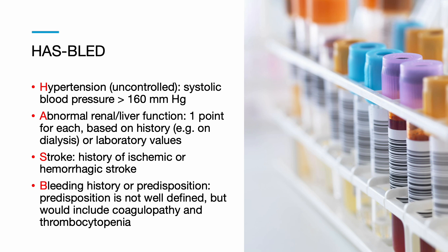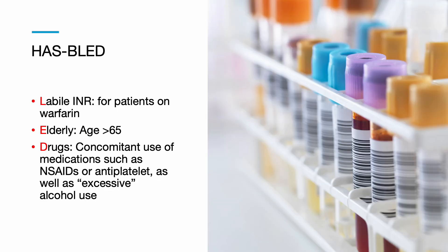H is for hypertension, which is poorly controlled with a systolic blood pressure of at least 160. A refers to abnormal renal or liver function. S refers to stroke — any history of ischemic or hemorrhagic stroke. B refers to bleeding history or predisposition to bleeding. L refers to labile INR for patients on warfarin. E refers to elderly — those patients over the age of 65. D refers to drugs: concomitant use of medications such as NSAIDs or antiplatelets, as well as excessive alcohol use.